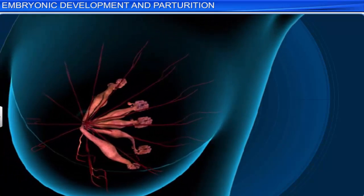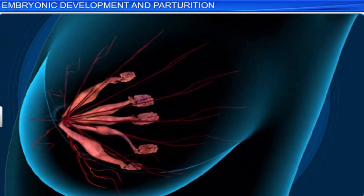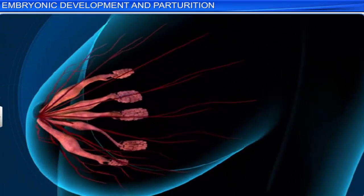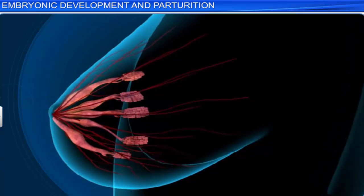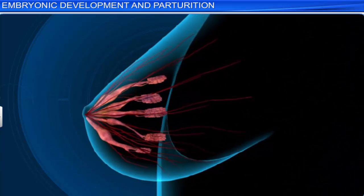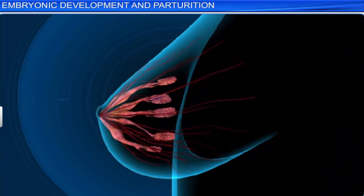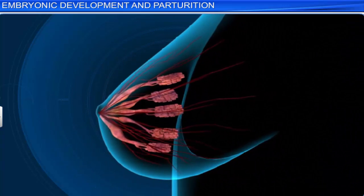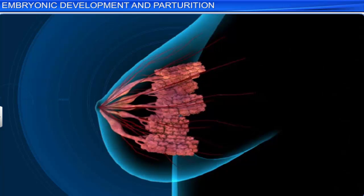Hormonal changes also cause the cells of the mother's mammary glands to differentiate, resulting in these glands producing milk by a process called lactation, towards the end of pregnancy.